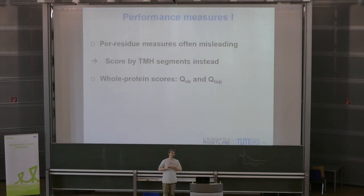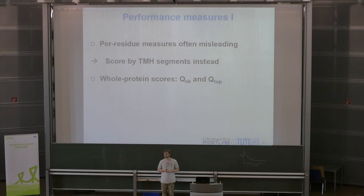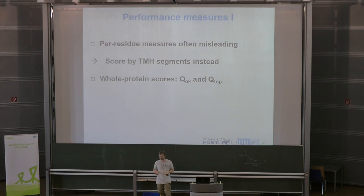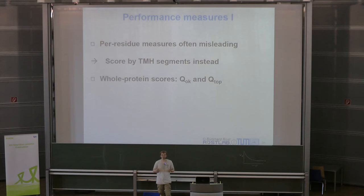Now, how good is TMSEC? A per-residue measurement can be misleading — if 18 of 19 transmembrane residues are predicted correctly but one in the middle is called soluble, accuracy is high but the prediction is biologically meaningless because we've split one helix into two. So for transmembrane helix prediction we use whole-protein scores: QOK and QTOP. QOK means: for what percentage of transmembrane proteins were all transmembrane segments predicted correctly? QTOP adds the additional criterion that the overall topology must also be correct.